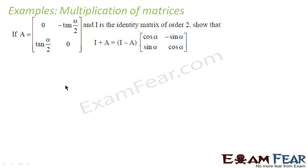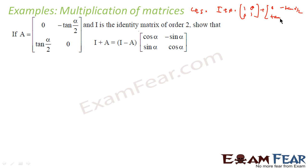Let's take one more example. It is given that matrix A = [[0, -tan(α/2)],[tan(α/2), 0]], and we have to prove that (I + A) = (I - A) × [[cosα, -sinα],[sinα, cosα]]. We have to prove LHS equals RHS. LHS is I + A, where I is the 2×2 identity matrix. So I + A = [[1, -tan(α/2)],[tan(α/2), 1]]. This is my LHS.